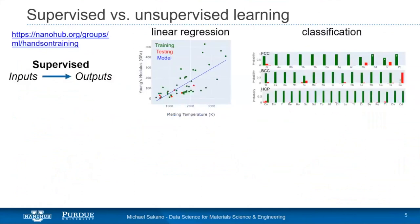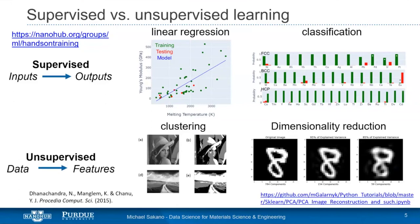I'd like to start by dividing machine learning into two branches: supervised and unsupervised. In supervised learning we take inputs, pass them through a model, and the model predicts outputs. We've developed linear regression models — for example, taking melting temperature to predict Young's modulus — and classification models, reading features like ionic conductivity or coefficient of thermal expansion to classify elements into crystal structures.